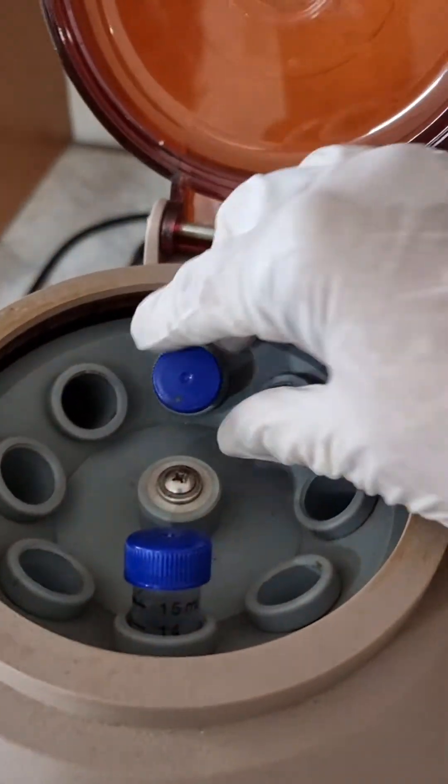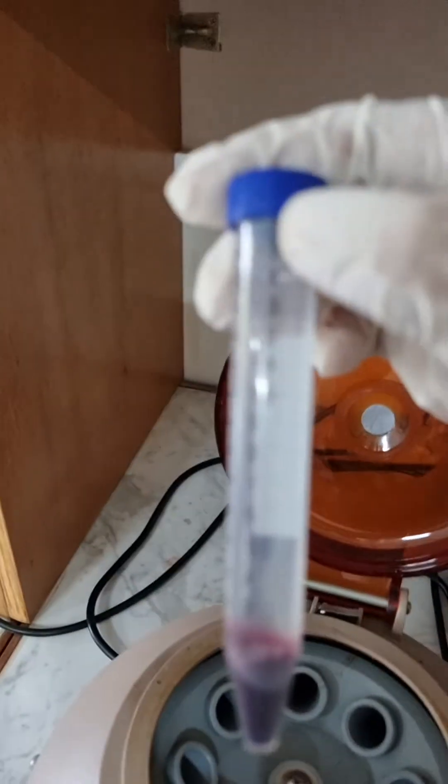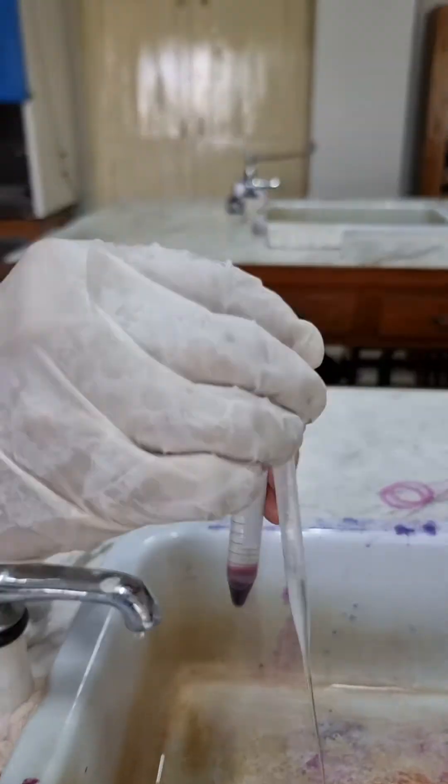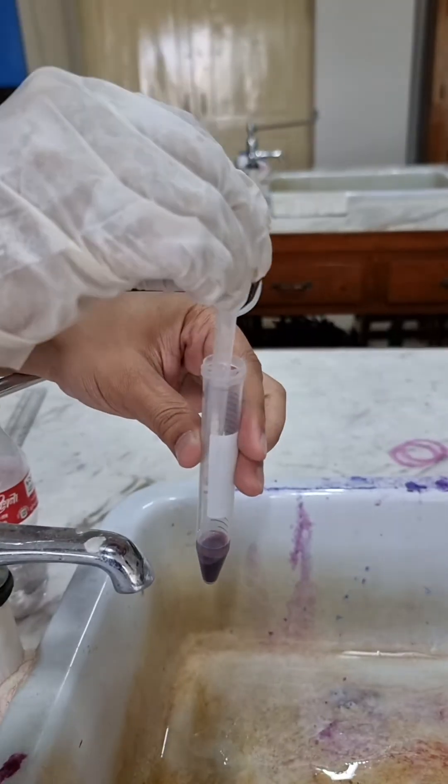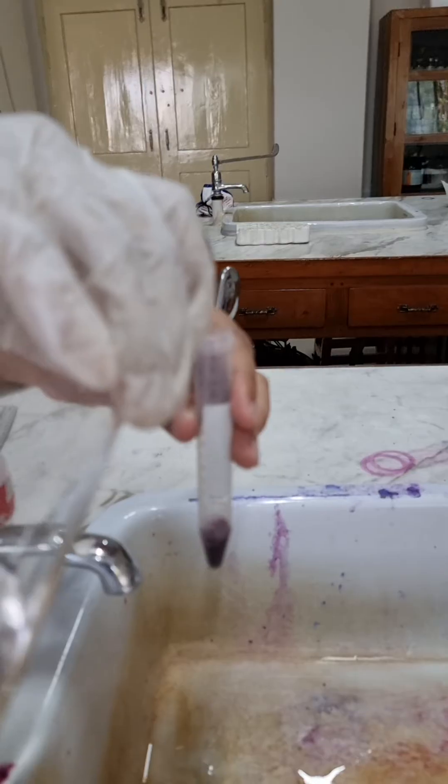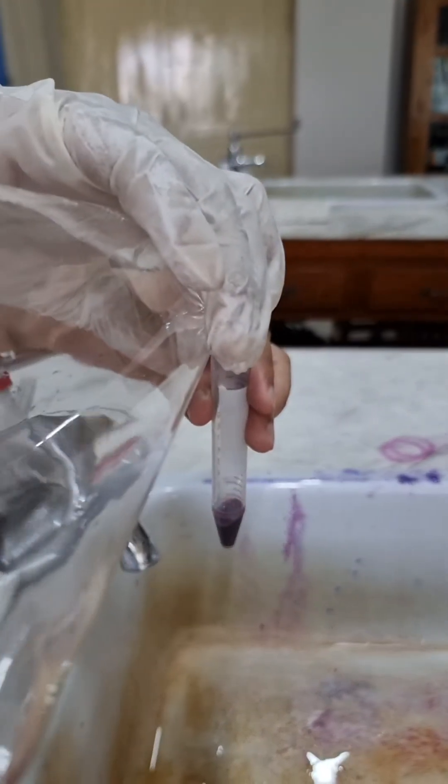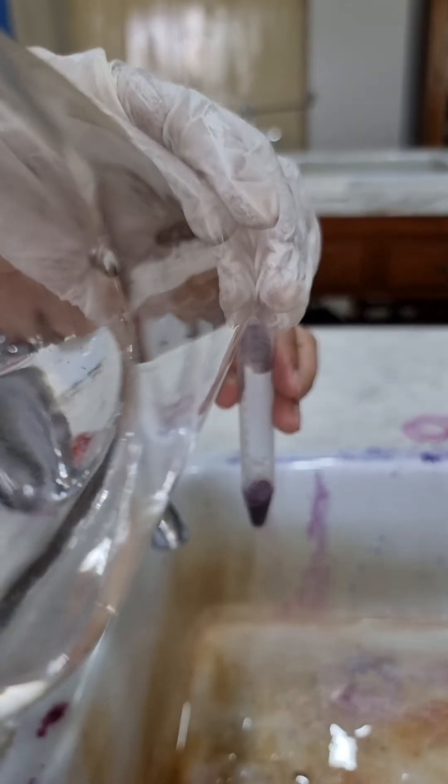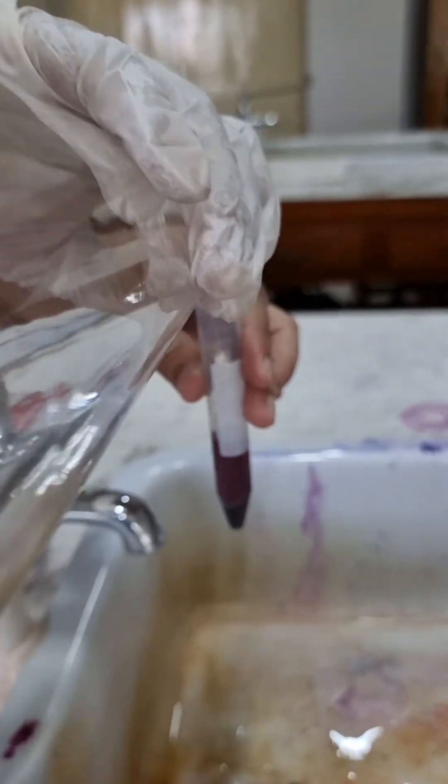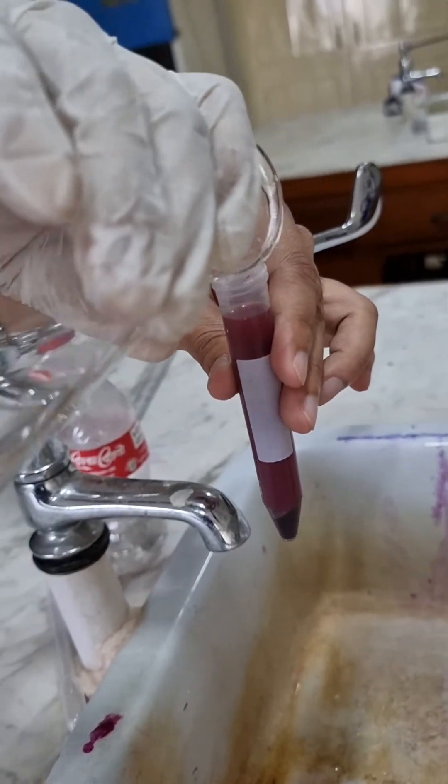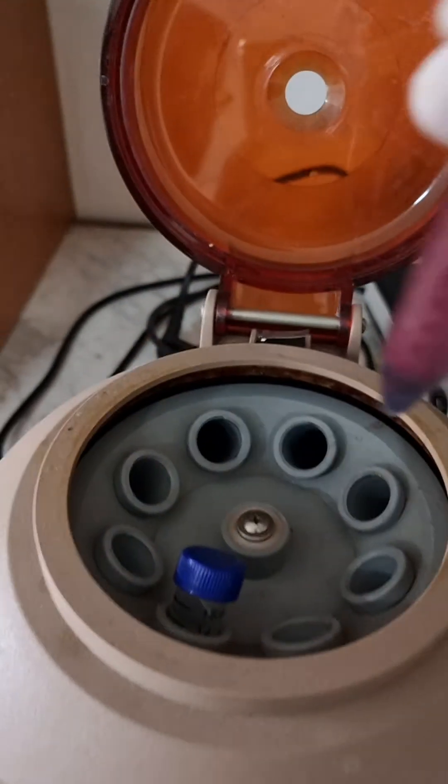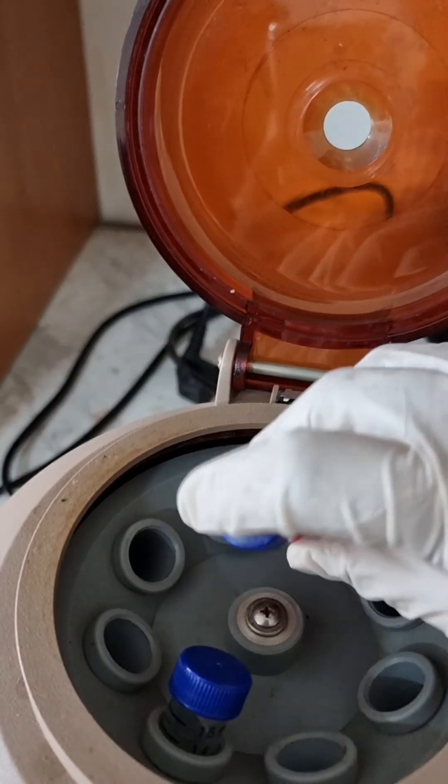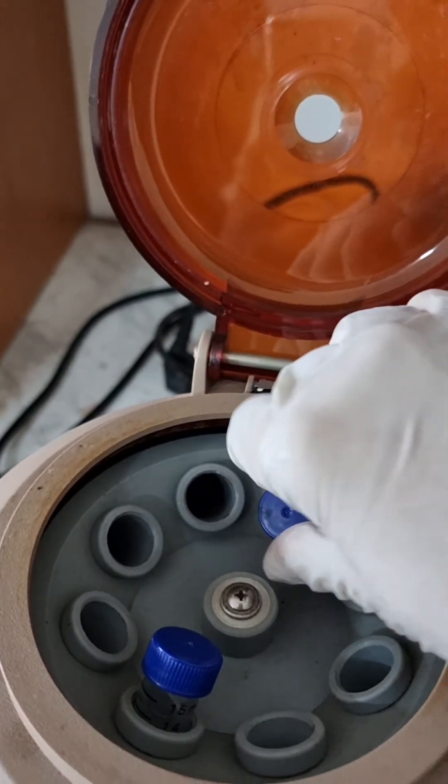After centrifugation, we dispose the clear fluid on top. Then again we have to add PBS to the pellet remaining at the bottom and then centrifuge it. We repeat this procedure three times.